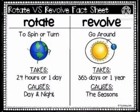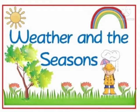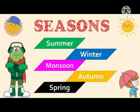The rotation of the earth causes day and night, and the revolution of the earth leads to the change in seasons. Now let us study about the result of revolution, i.e. the change in seasons. There are 5 seasons: the summer season, winter season, monsoon season, autumn season and spring season.